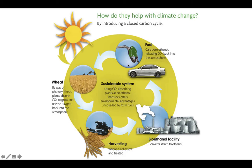If you're burning ethanol, it's producing CO2, but then quickly that CO2 will be captured by wheat or corn, harvested and turned back into bioethanol, and then burned again. So the CO2 is cycling very quickly, as opposed to reintroducing carbon that has long been stored underground.